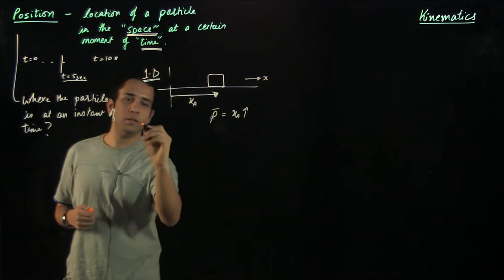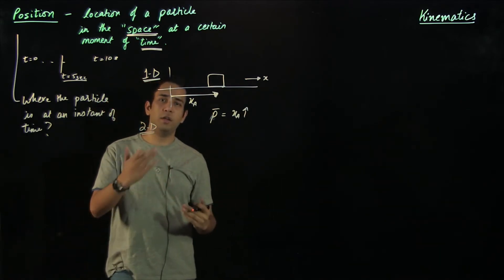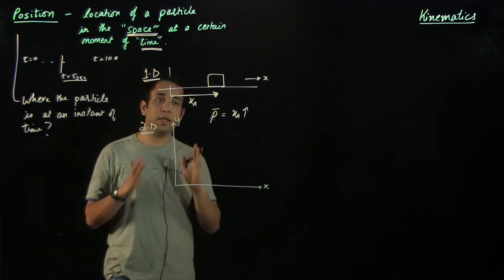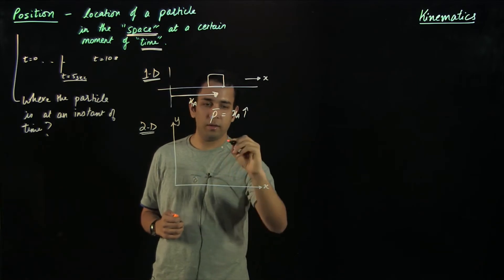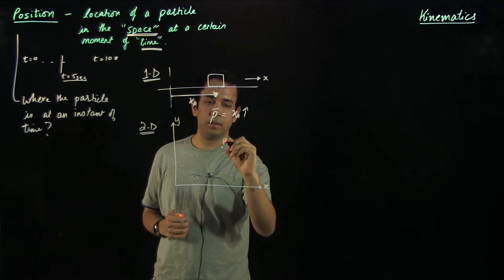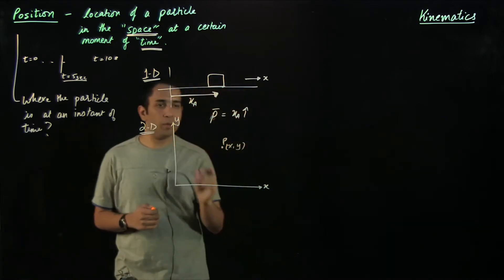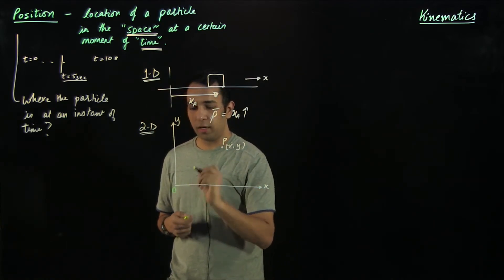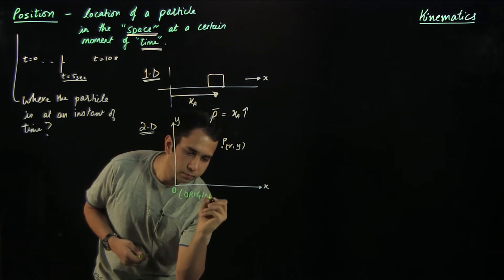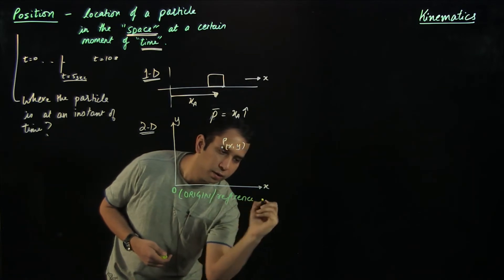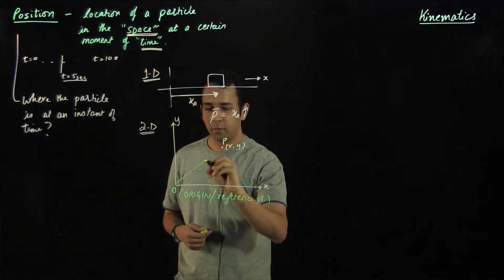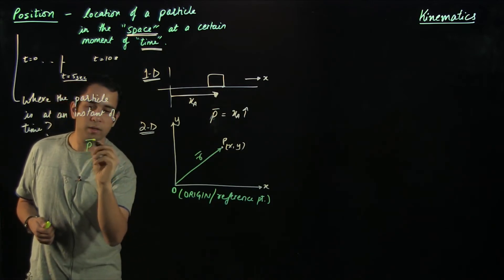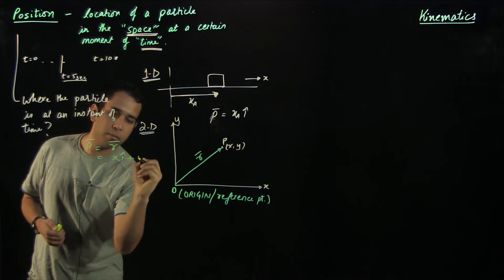Similarly, in 2D (two-dimensional) motion, we have both an x-component and a y-component. The position at a certain instant of time at a point P can be written with coordinates (x, y). The actual position is defined with respect to an origin or reference point that is not moving in space with respect to time. The position vector r is drawn from the origin to point P, and can be written as r = x î + y ĵ.